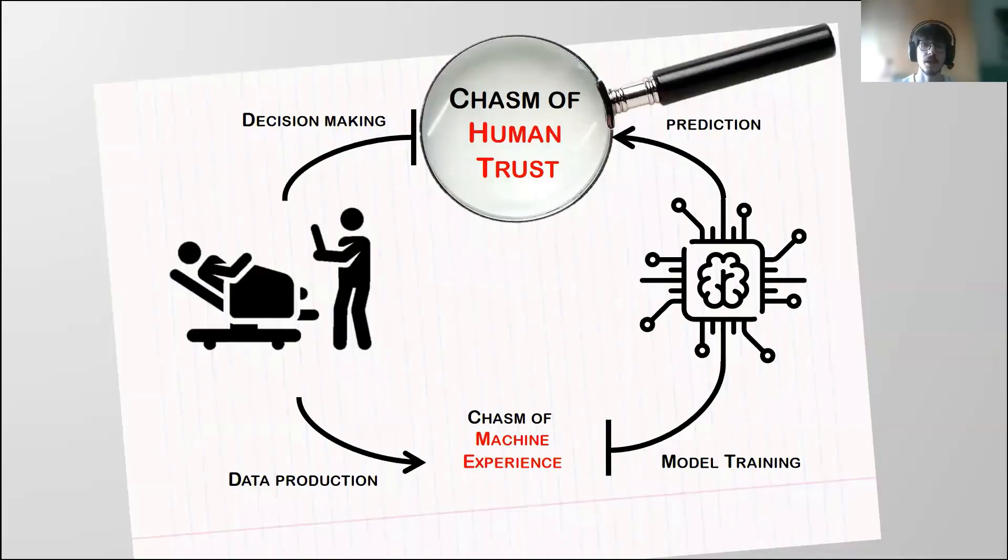To start, despite the increasing interest toward artificial intelligence systems and the growing number of successes reported in the literature, there still remain two important gaps and limitations that limit the deployment and applicability of these systems in real-world decision settings, especially critical ones like the medical field. These two gaps are called the chasm of human trust and the chasm of machine experience. The chasm of machine experience refers to problems related to data reliability and data vetting processes.